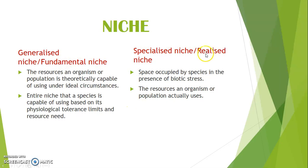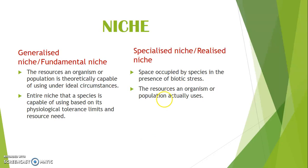Specialized niche, or realized niche, is the space actually occupied by the species in the presence of biotic stress. It is the resources an organism or population actually uses. Two closely similar species having the same ecological niche cannot coexist for a longer time. If two species are too closely related or share the same ecological niche, they cannot coexist for longer.